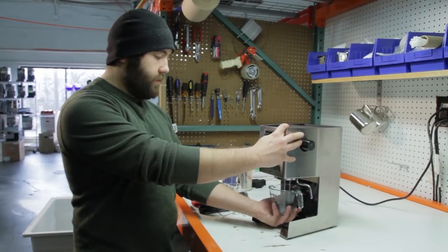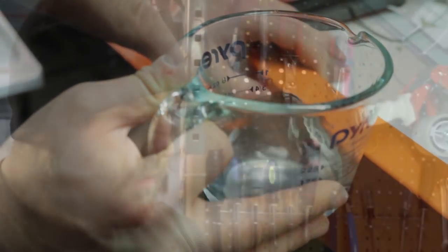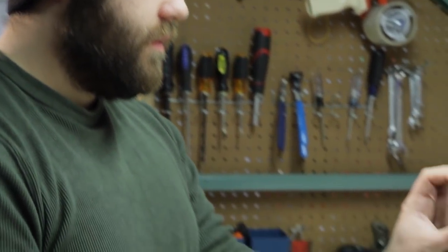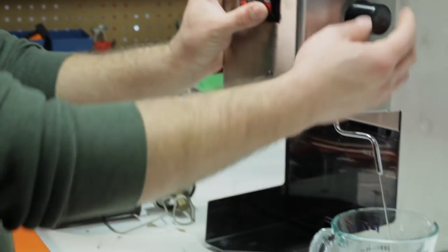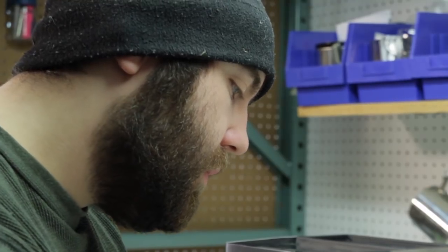Then we run water through the brew group and the steam wand and we check for scale. If there's any scale, we will take the boiler apart at that point and actually clean it out. We turn the pump on, we check the sound of the overall machine. The solenoid valves, the pumps, you can tell a lot by the sound of the machine, what shape it's in.